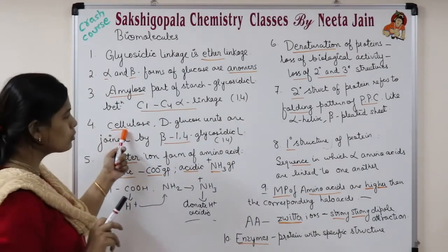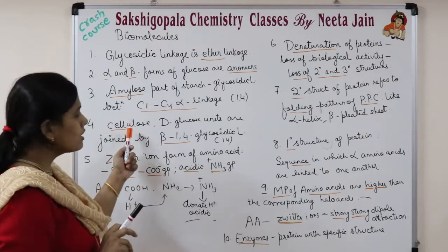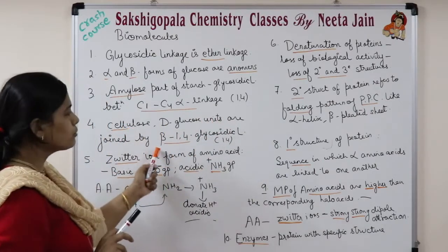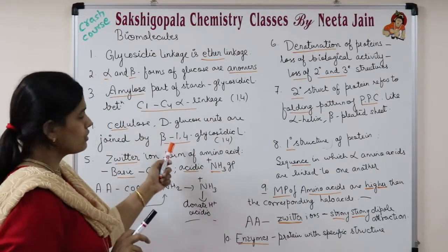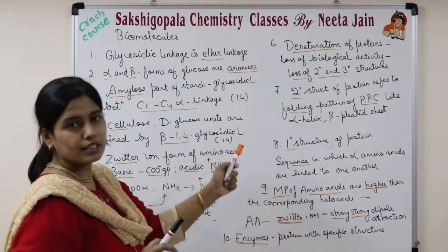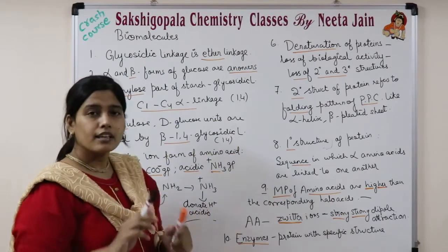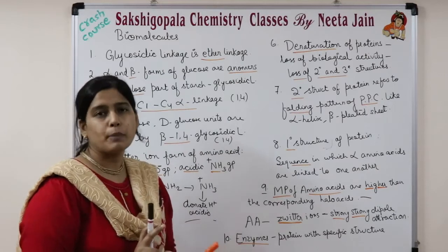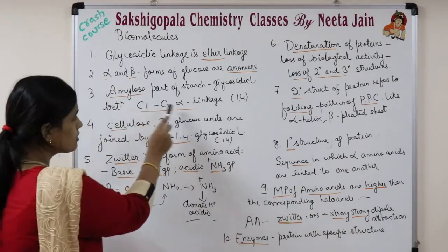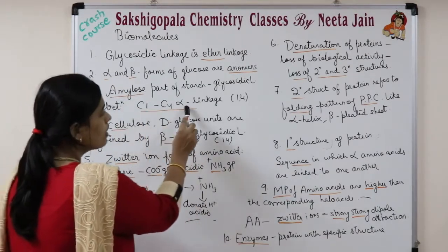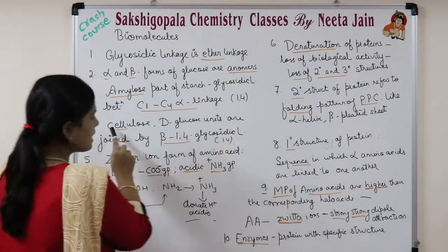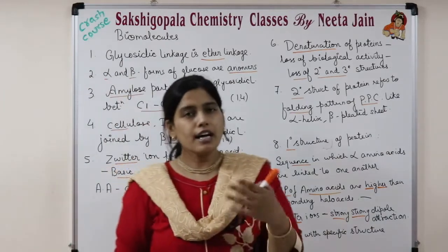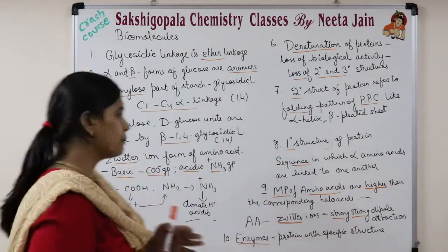Next is cellulose. In cellulose, D-glucose units are joined by a beta glycosidic linkage at carbon-1 and carbon-4. So to summarize: amylose has an alpha linkage and cellulose has a beta linkage between C1 and C4.